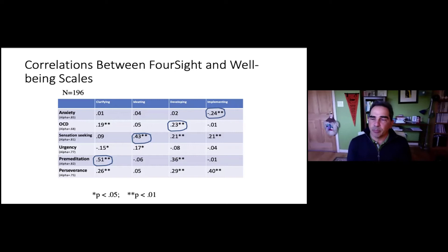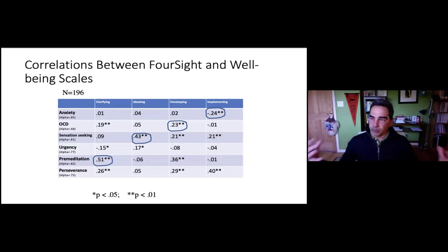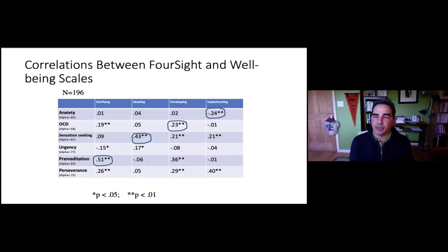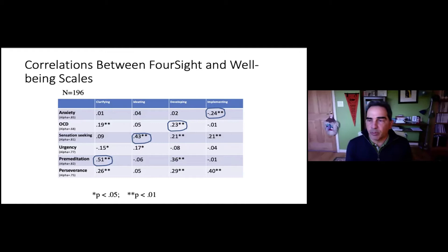One of the big implications of this research is that it promotes flexibility. In order to be a fully healthy individual, it's valuable to develop these states of well-being by recognizing that we gain from taking on all of these mindsets. We still have our natural tendencies and preferences, but by learning to adopt each of these mindsets, we help ourselves become a fully developed human being.